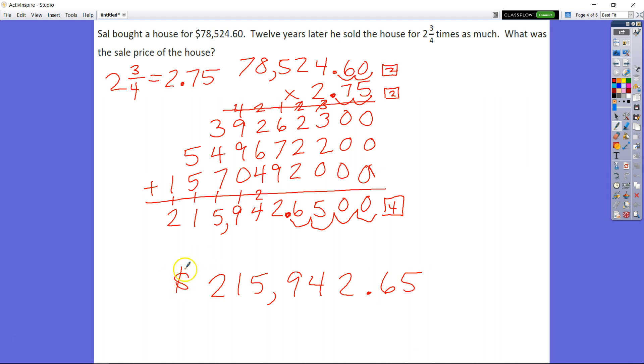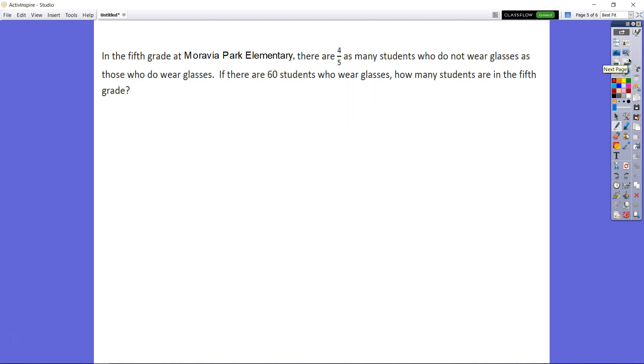If you had trouble with that multiplication, stop, go back through it, and just make sure you're double-checking all of your multiplication. Let's move on to number 5. In the 5th grade at Moravia Park Elementary, there are 4 fifths as many students who do not wear glasses as those who do wear glasses. If there are 60 students who wear glasses, how many students are in the 5th grade?